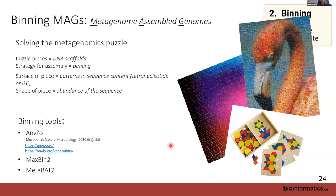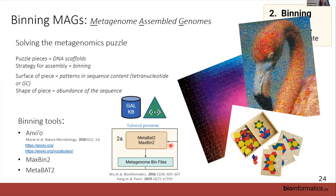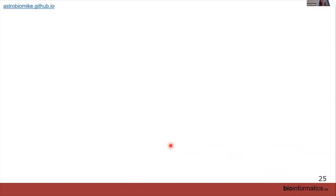We're not teaching Anvi'o in this course — it's really powerful and well-developed with lots of tutorials, but it requires installation in an Ubuntu system and computational resources, and isn't really accessible for non-coders yet. The two binning tools we're going to work on are MaxBin 2 and MetaBat 2, which are very commonly used in pipelines. Those are the two you'll work on in today's tutorial.